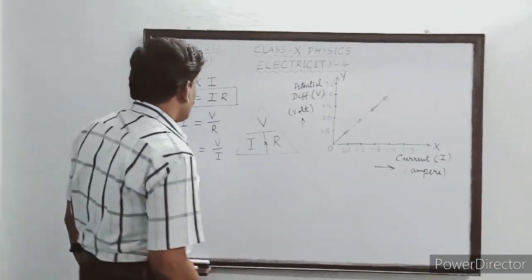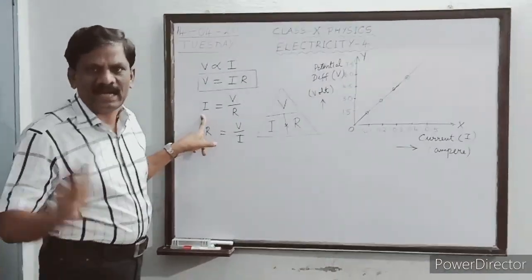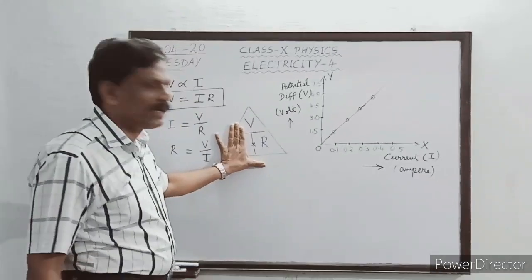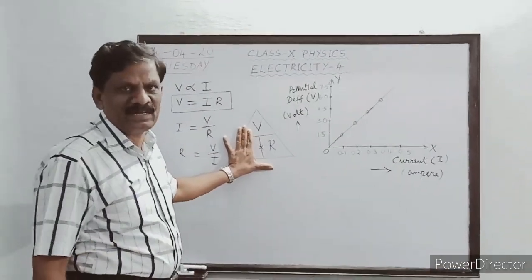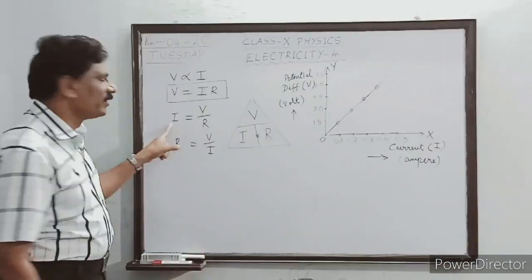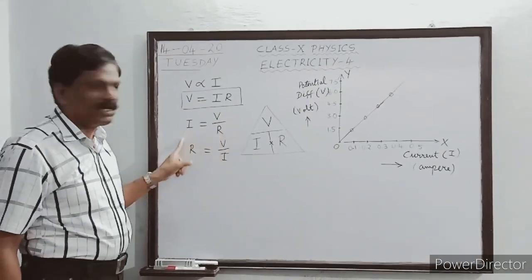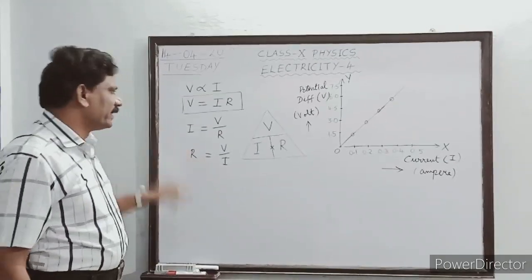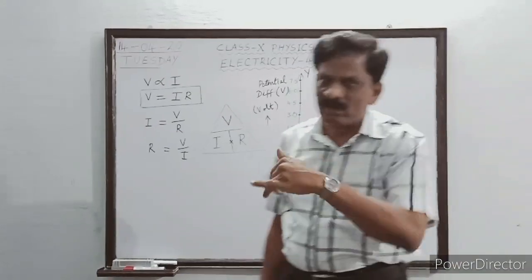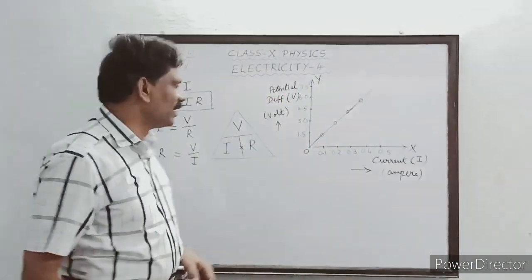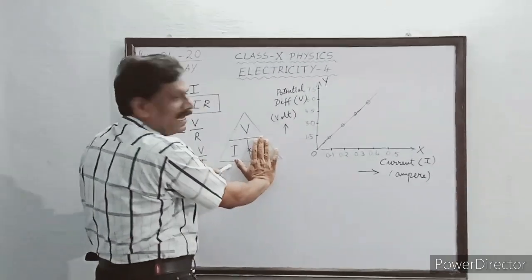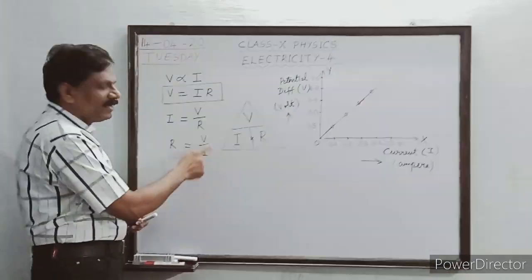Now to get an expression for the current I, cover the portion I and look at the remaining portion of the triangle. It is V divided by R. So we get I equal to V by R. For resistance R, cover R and what remains is V by I. So R is equal to V by I. That is why it is called a magic triangle.